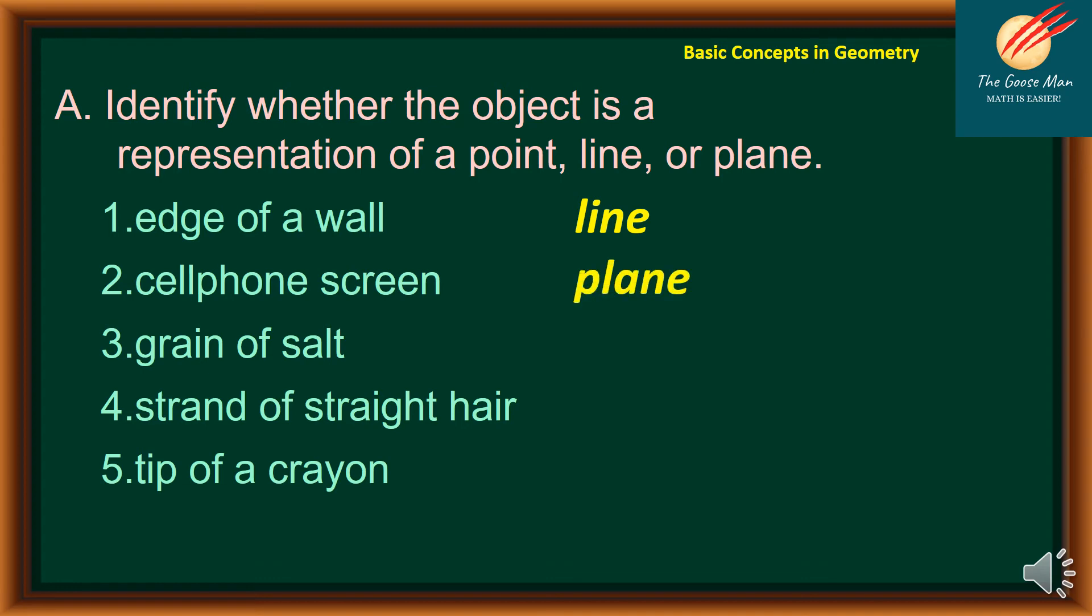Next, number three, grain of salt. This is a representation of point. Next, strand of straight hair is actually a line. And finally, tip of a crayon is a point.